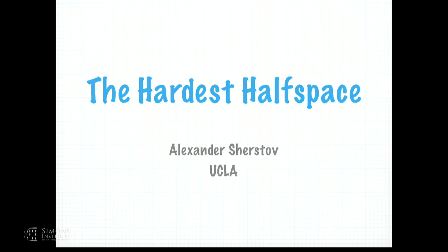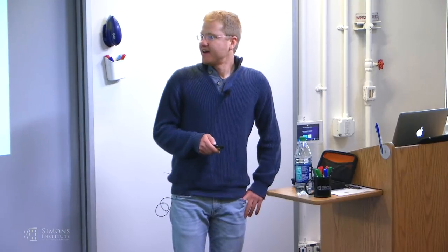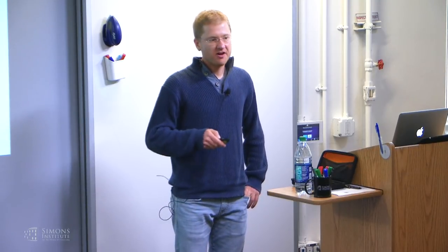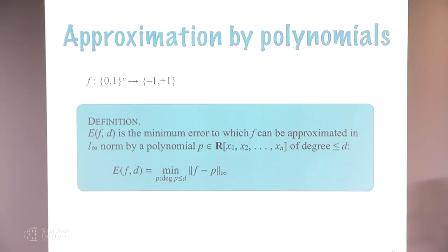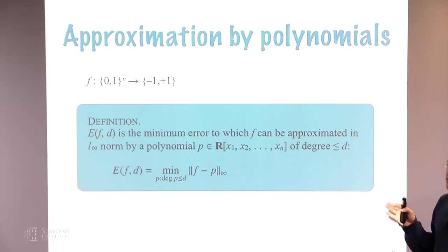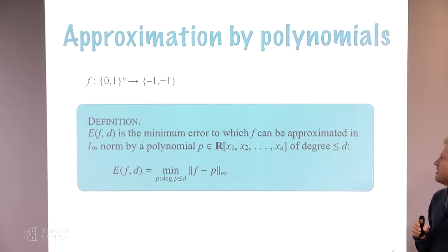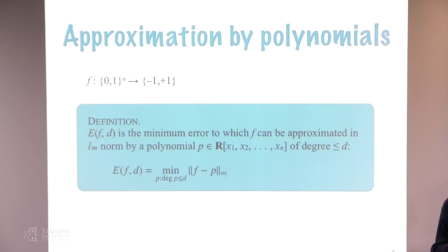Welcome Sasha Shrestov from UCLA to the very first talk. The key notion in this talk is going to be approximation by polynomials — point-wise approximation. The key quantity is E(f, d): f is an arbitrary Boolean function, and E(f, d) is the minimum error to which f can be approximated in the infinity norm by a polynomial of degree at most d, where the polynomial can have arbitrary real coefficients.